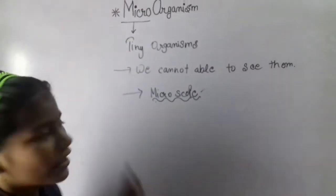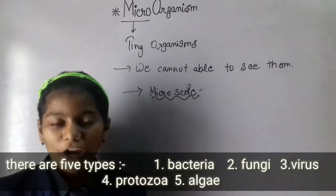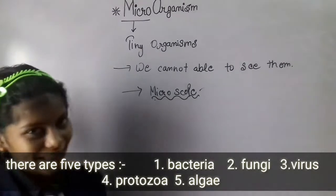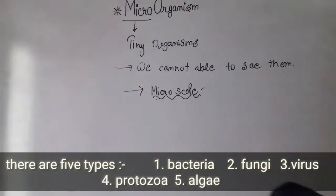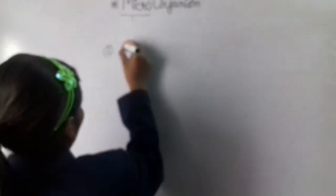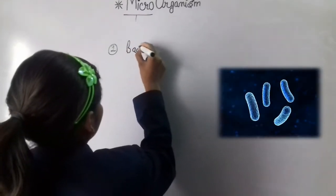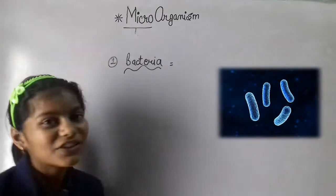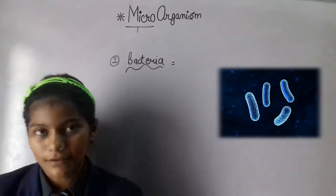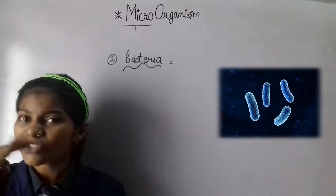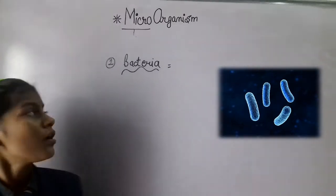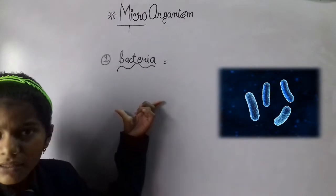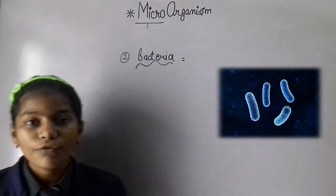There are basically five types of microorganisms, so let's see them. First will be bacteria.